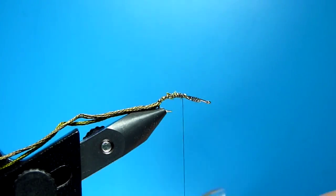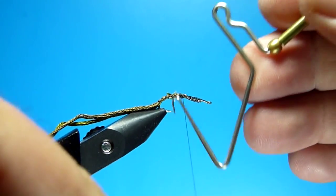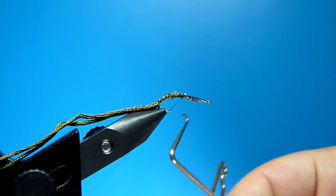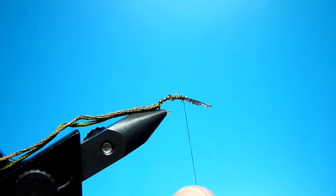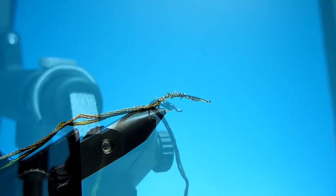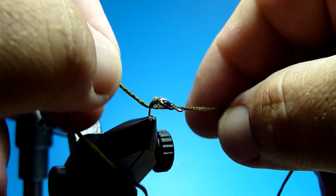You're going to go ahead and grab your whip finish and whip finish your fly here in the middle, just with a couple wraps. Go ahead and cut your thread, we're going to tie this next section of the fly without the thread getting in the way.